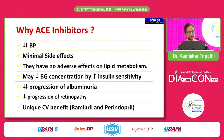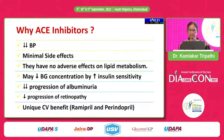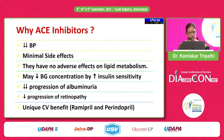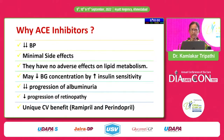Why ACE inhibitors? ACE inhibitors are the first line of treatment in diabetes with hypertension. They lower the BP with minimal side effects, have no adverse effects on lipid metabolism, may decrease blood sugar concentration by increasing insulin sensitivity, decrease the progression of albuminuria, decrease the progression of retinopathy, and have a unique cardiovascular benefit. That is why we have been using ramipril and perindopril.